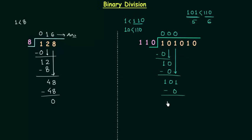So remainder is 101 and this 0 will now come down and we have 1010.